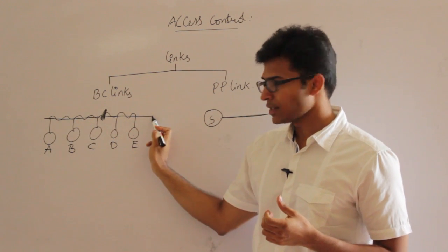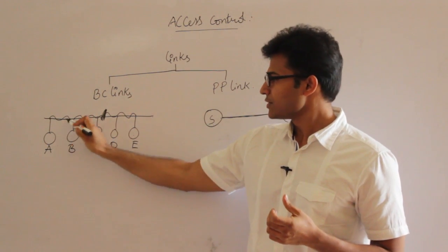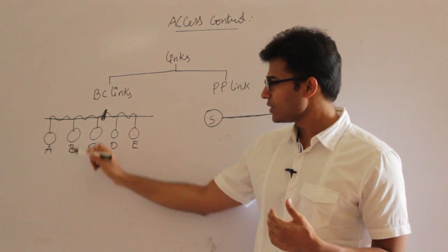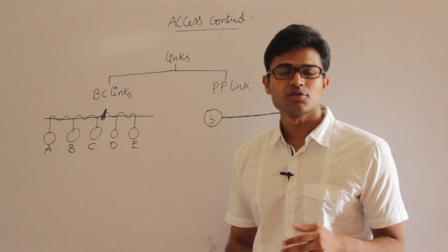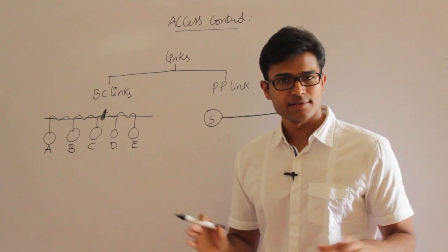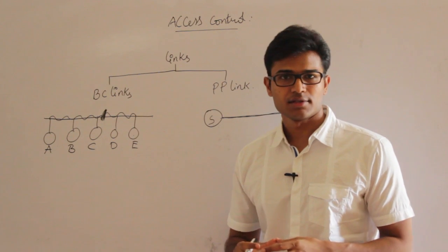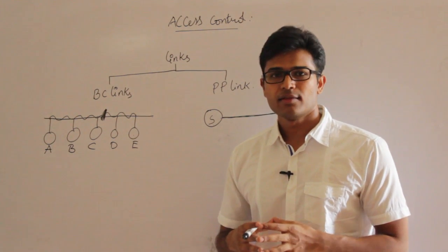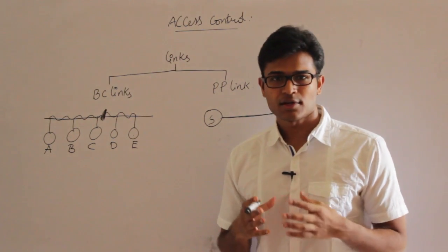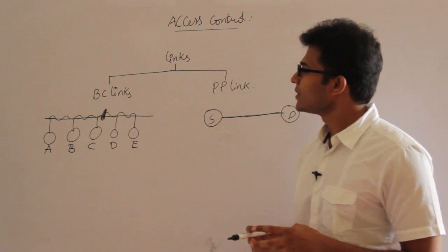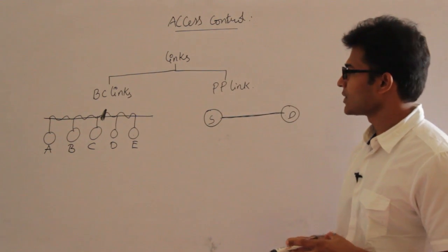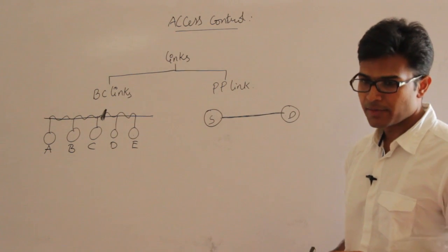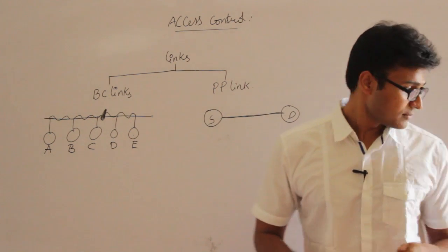Access control methods means: whenever you have a broadcast channel, only one station should send data, or if more than one station is sending data, there should be no collisions inside the channel. If you could somehow make this happen, then it is called an access control method. There are various ways access control methods have been implemented — I will show you all the methods one by one.